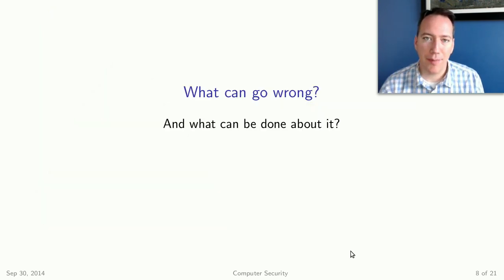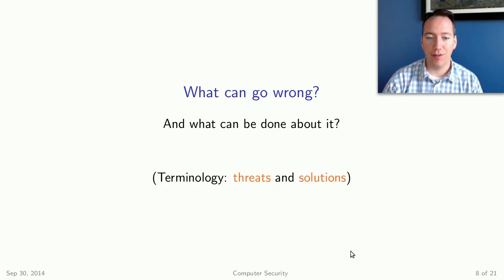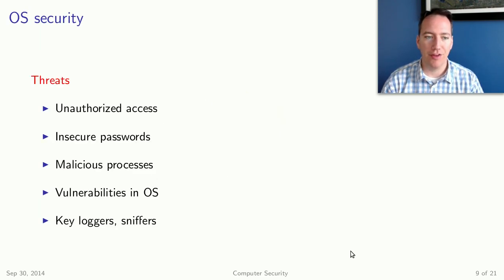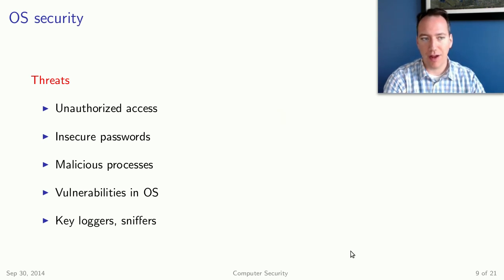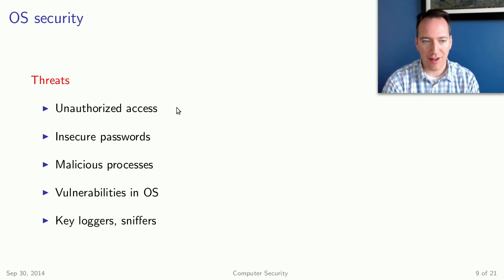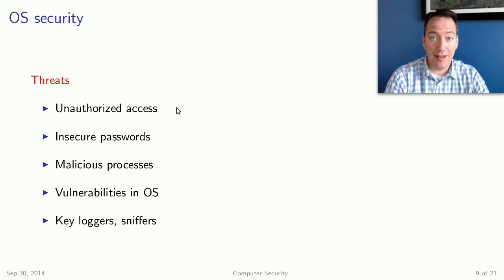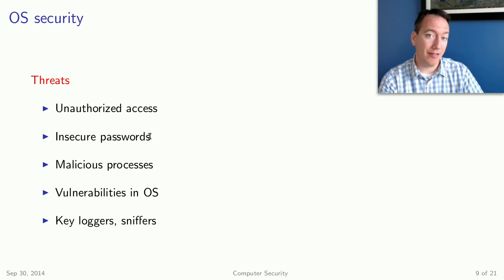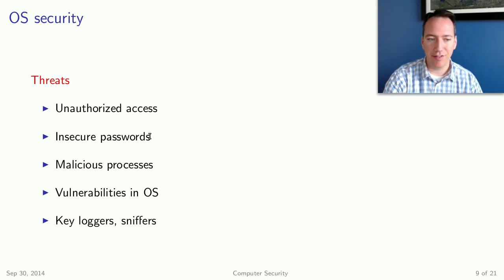So let's talk about what can go wrong and what type of solutions we have to these problems. We'll use the terminology of threats and solutions. A lot of these are mentioned in the book. Looking at chapter three, which talks about operating systems, the threats include unauthorized access — somebody logging in as an administrator who should not be on the computer — and insecure passwords, because if somebody guesses a bad password, they have access to the system as that user.